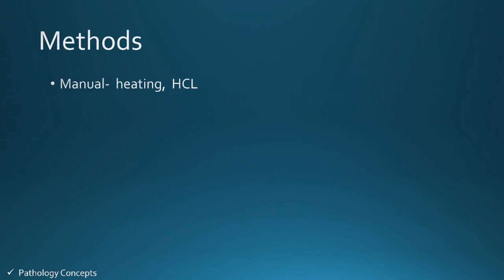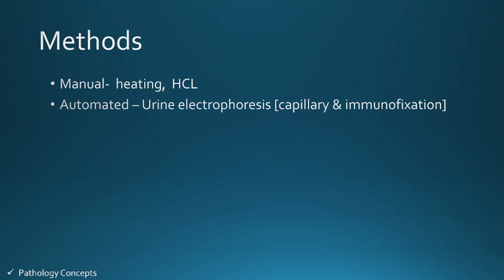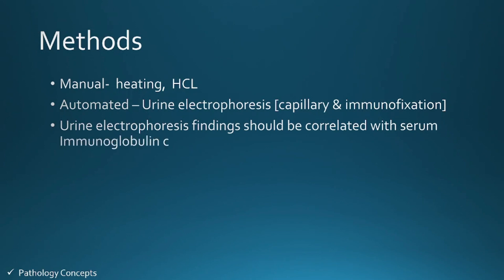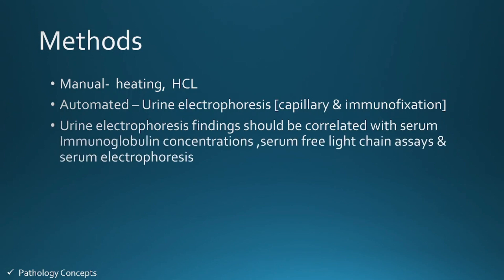Manual methods include the heating method and the hydrochloric acid modified acid method. Automated methods include urine electrophoresis — either capillary or immunofixation. Urine electrophoresis findings should be correlated with serum immunoglobulin concentration, serum free light chain assays, and serum electrophoresis results.